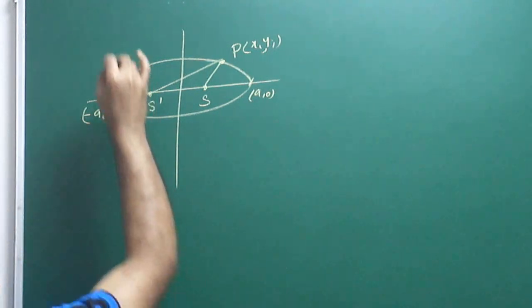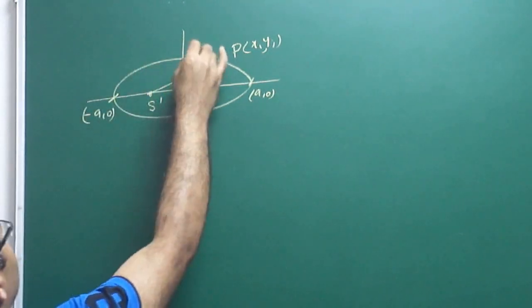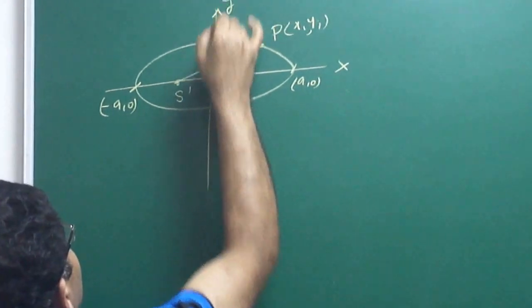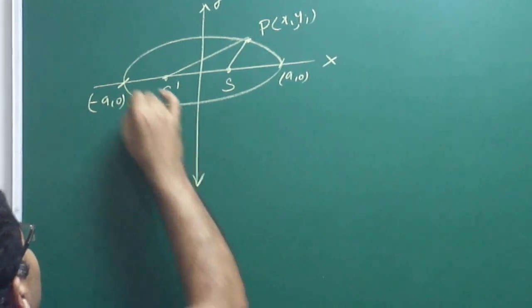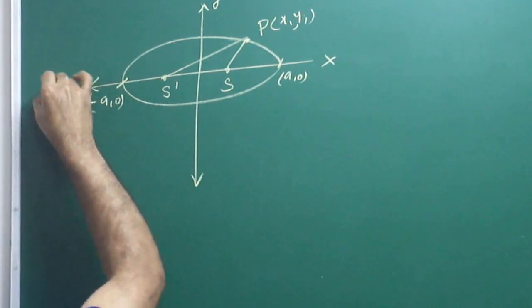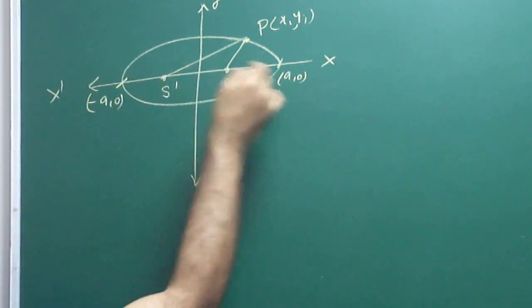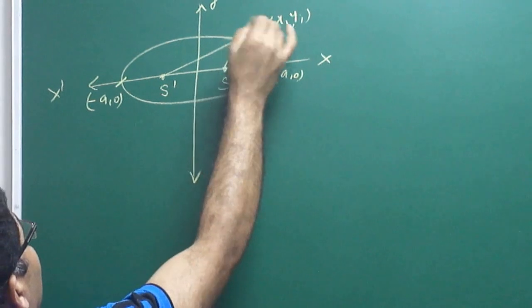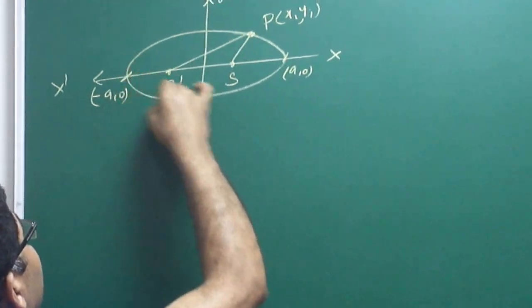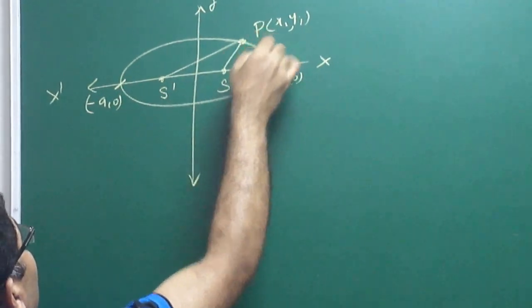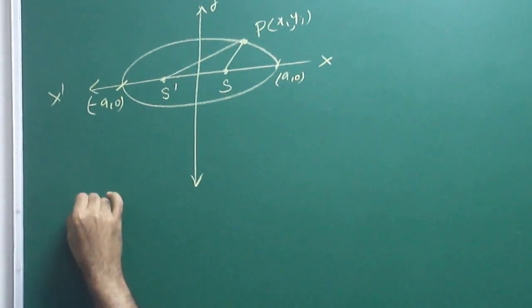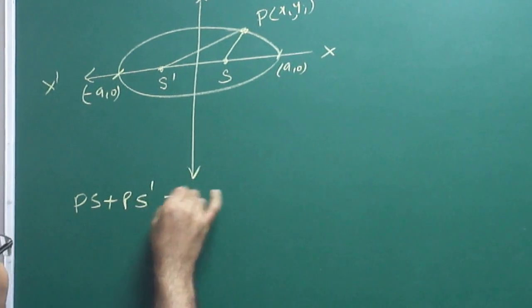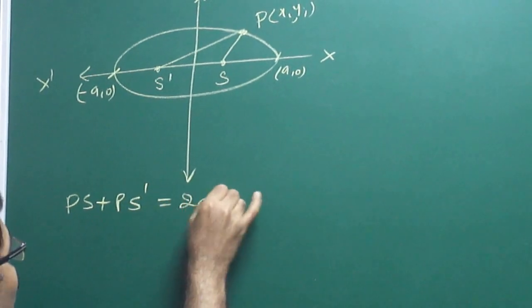For any point P on the ellipse, this is the x-axis, this is the y-axis, and this is the x-dash axis. The sum PS plus PS-dash is equal to 2a.